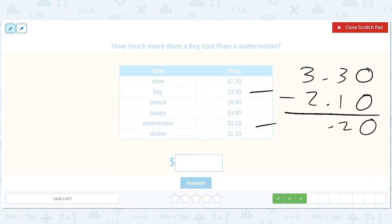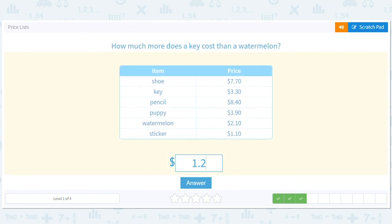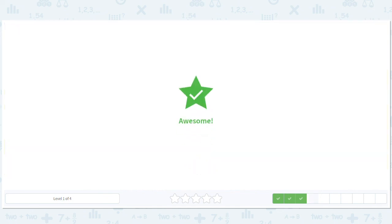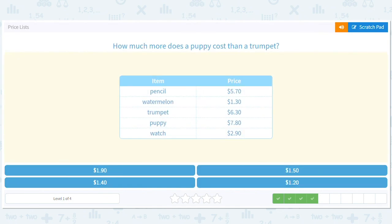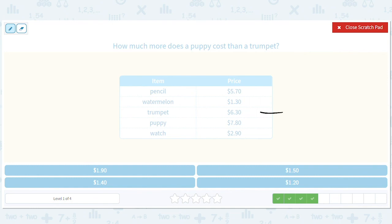How much more does a puppy cost than a trumpet? Well, a puppy, my friends, is priceless. A trumpet is $6.30, so we take our $7.80 and subtract six point three zero. Zero here, eight minus three is five, and then seven minus six is one. So hey, save up an extra dollar fifty and go for the puppy, is what I say.